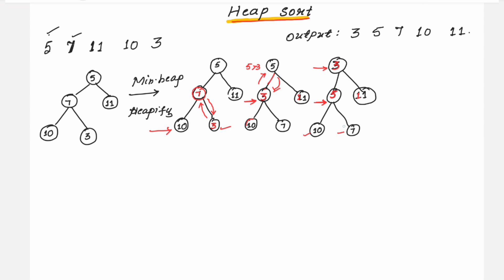Now one more operation is needed in heap sort: delete the root node. Delete 3 — the root node gets deleted and placed in the sorted list. Once you delete 3, that position becomes vacant. The element at the leaf level is placed there. At the leaf level we have 10 and 7; you always select from the right side, so 7 comes to the root position.